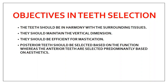The next objective is they should maintain the vertical dimension. We know we take various types of jaw relation, and vertical dimension is one of them. The teeth that you are selecting should maintain that vertical dimension, because if the vertical dimension is more or less, it will have various ill effects — covered in the video on vertical jaw relation.